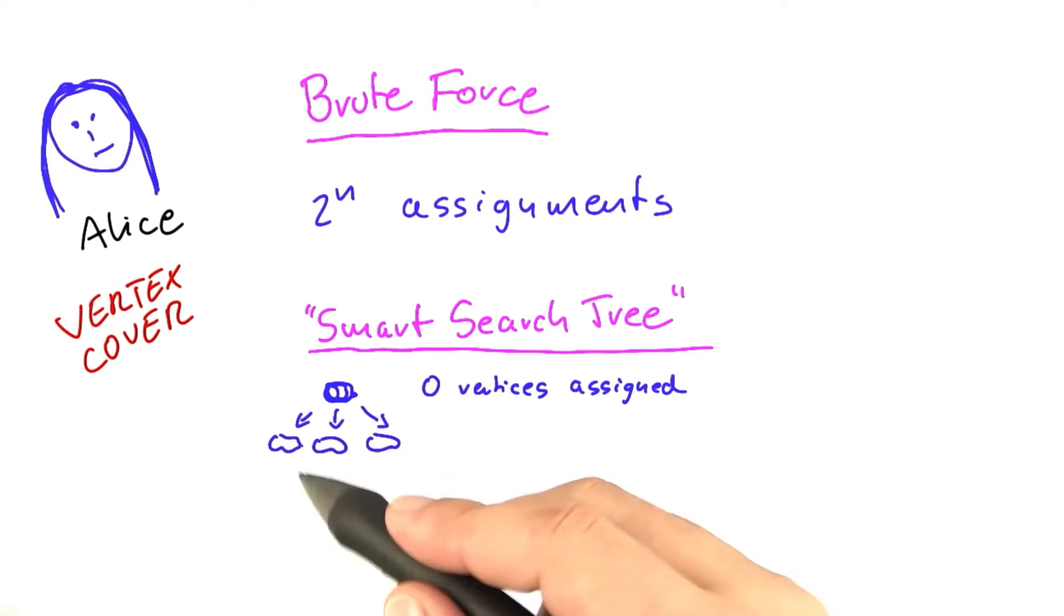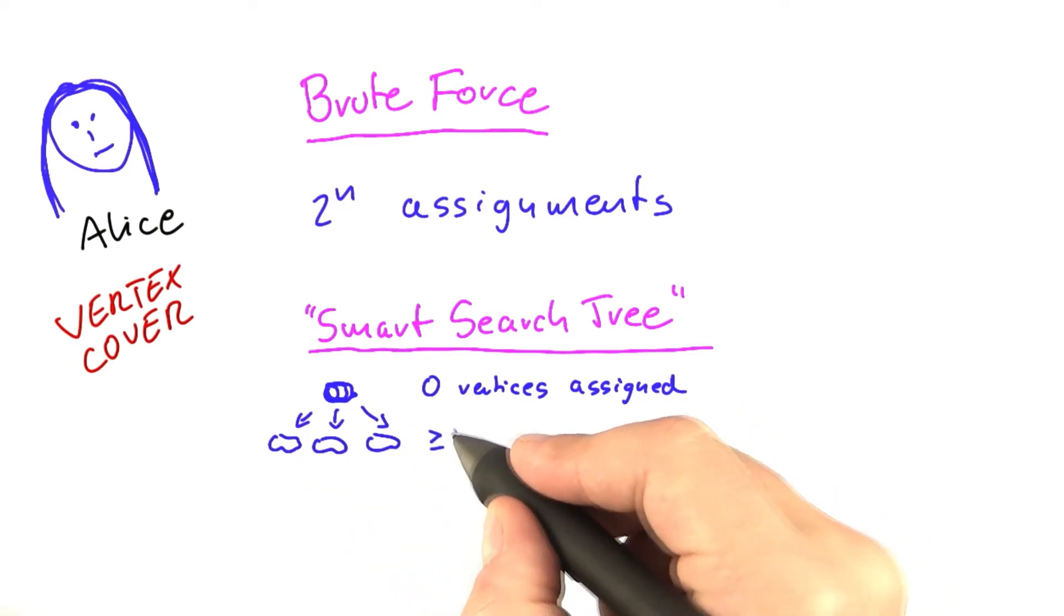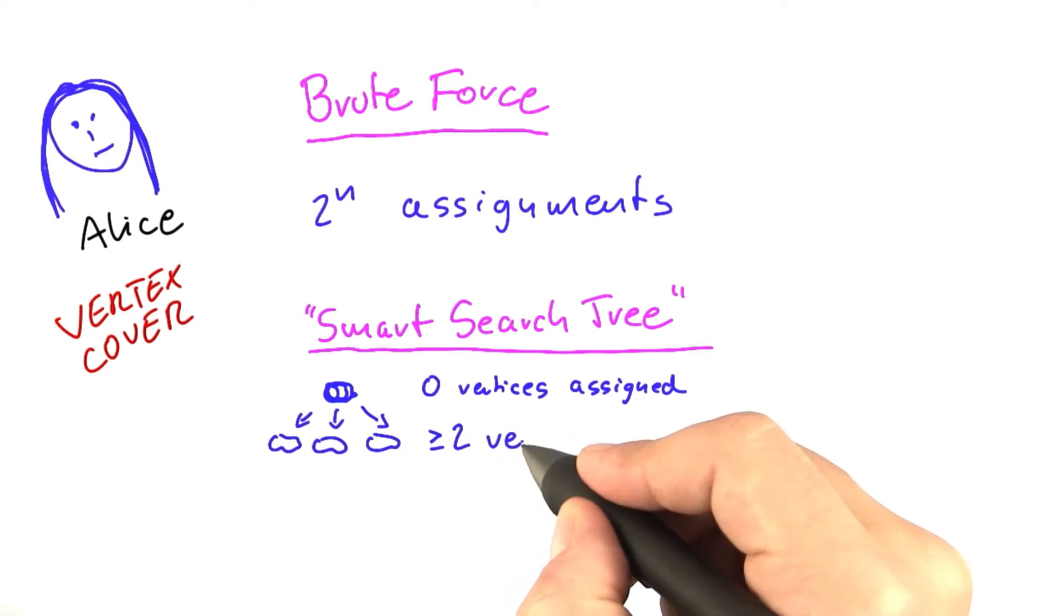Now since we know that we can construct it so that in the next level we will have at least two more vertices assigned. Here we know that we have at least two vertices assigned.